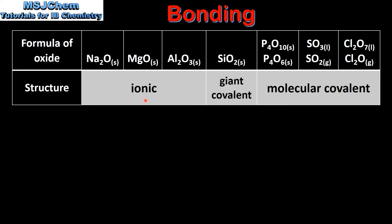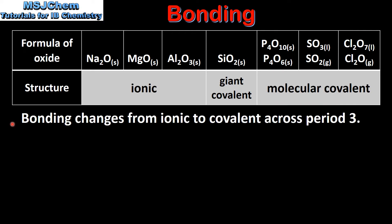Sodium, magnesium and aluminium all form ionic compounds with oxygen. Silicon dioxide has a giant covalent structure. And phosphorus, sulphur and chlorine all form molecular covalent compounds. So as you can see, the bonding changes from ionic to covalent across period 3.